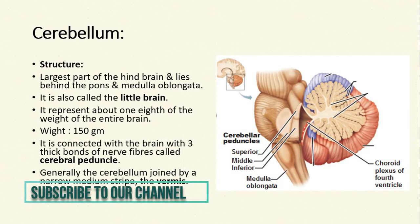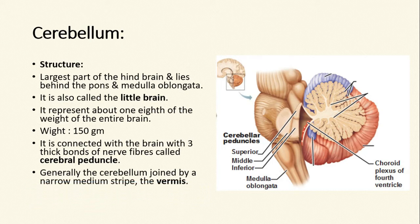Proportionately, cerebellum is the largest part of the hindbrain and lies behind pons and medulla oblongata. It is also called the little brain. It represents about one-eighth of the weight of the entire brain. On an average, the cerebellum weighs 150 grams. It is connected with the brain with three thick bands of nerve fibers called cerebral peduncle.